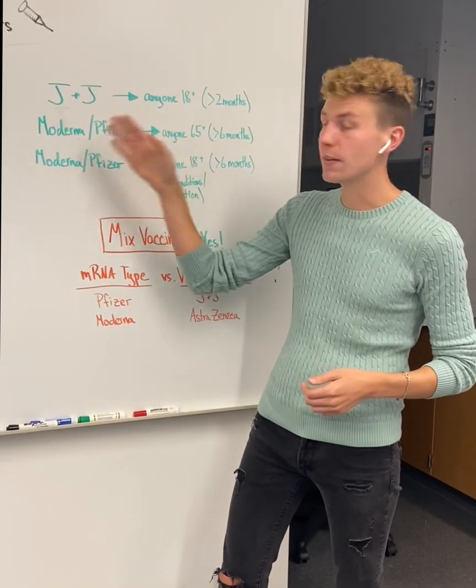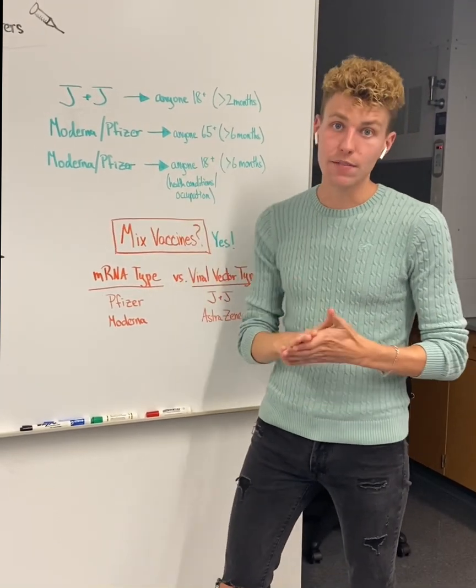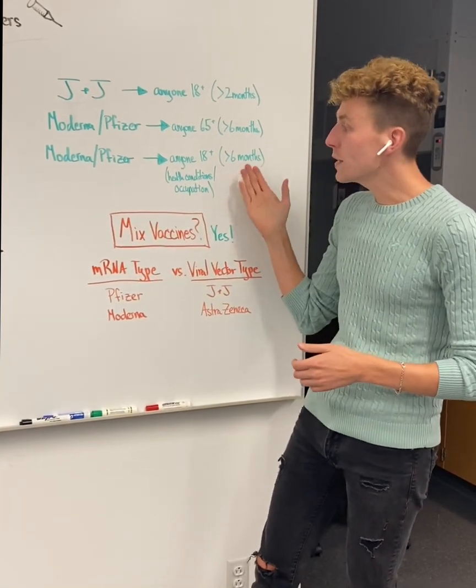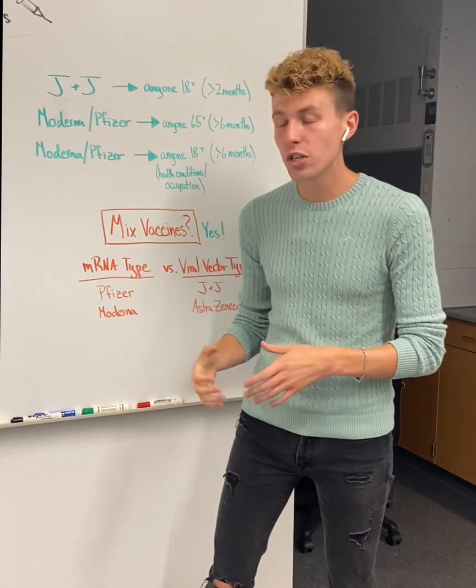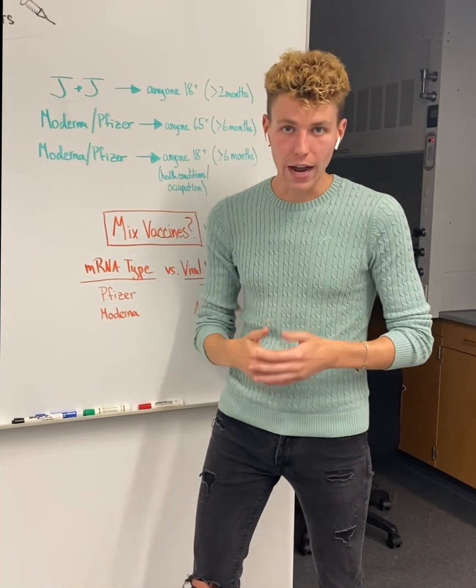The second is anyone who received a Moderna or Pfizer vaccine more than six months ago that's 65 years or older. And the third is anyone who received a Moderna or Pfizer vaccine more than six months ago that's 18 years or older that has an underlying health condition or who works in an occupation that they may encounter the SARS-CoV-2 virus.